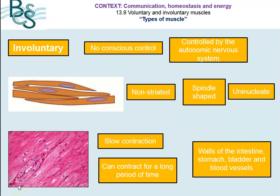The next muscle type are the involuntary muscles — ones where there is no conscious control and they are controlled by the autonomic nervous system. If you look at the diagram here, they are non-striated; they don't have any stripes. They're spindle-shaped and again they're uninucleate, so there's only one nucleus per cell. They are slow at contracting, but they do contract for a relatively long period of time.